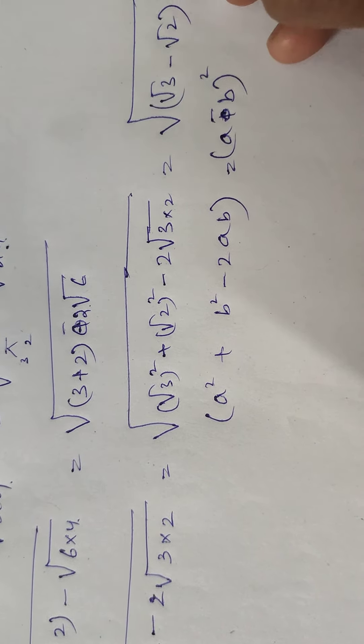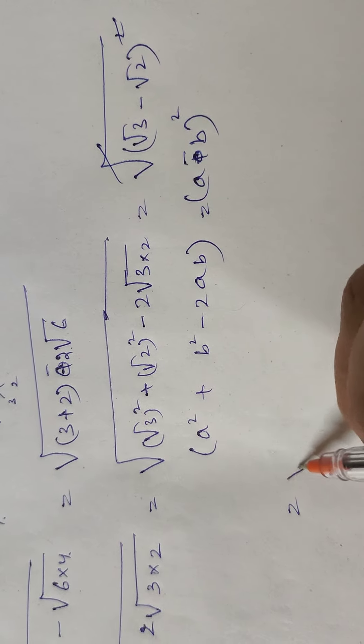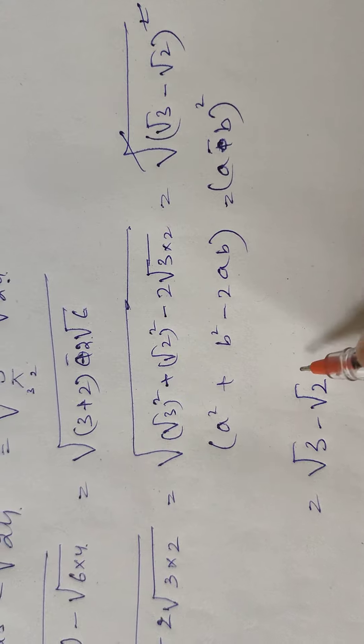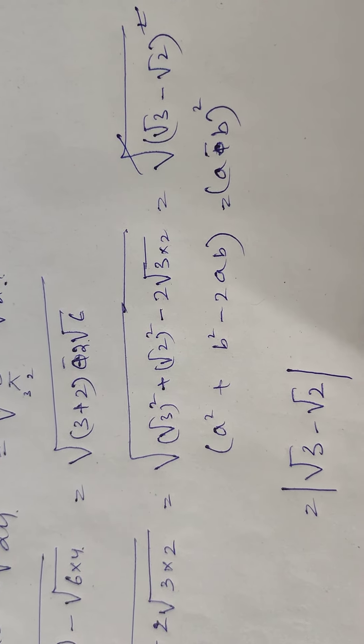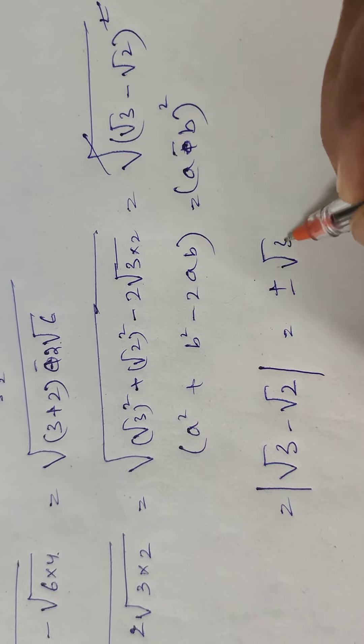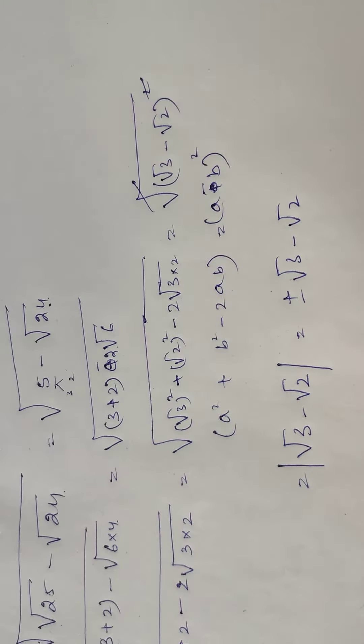So this square and root goes away, remaining with root 3 minus root 2. When the root goes away, we will be having an approximate estimate value. Okay, so that can be plus or minus root 3 minus root 2. Hence proved. But a single point... 1 point 1 point 2 point.